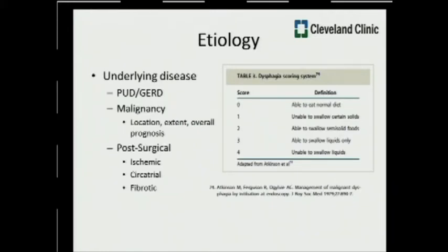Looking at the literature, most studies reference the Atkinson classification dysphagia scoring system. It's important to get familiar with the various degrees of dysphagia — in this classification from zero to four, you're looking at both solid and liquid tolerability. For post-surgical strictures specifically, it's important to understand the etiology: from ischemic early strictures, to cicatrial or mucosal strictures caused by lack of use, to fibrotic or severely inflammatory strictures. This will help dictate your management algorithm.